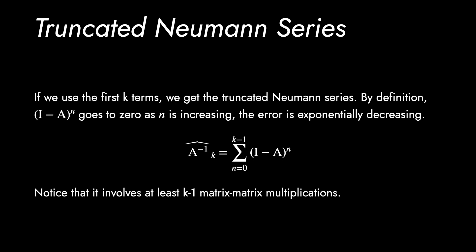If we use the first k terms, we get the truncated version of Neumann series. The terms go to 0 as n increases, while the error is exponentially decreasing. Notice that this involves k minus 1 times of matrix matrix multiplications, which increases the time complexity in the computation.